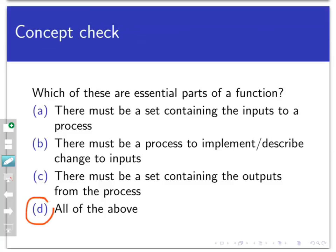The answer here is going to be D, all of the above. A function is basically a process that changes one thing into another thing. There need to be three items in place for that process to be valid. First, there needs to be a set that contains all the inputs. There has to be a process specified, either as a formula, a list of directions, or a piece of software. And finally, there needs to be a set that contains all the outputs.